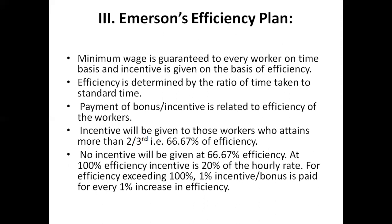The Emerson plan is similar to what we have studied before — Halsey and Rowan — but it is slightly different from those two. In this plan, minimum wages are guaranteed, as in the previous two plans, and the incentive is given on the basis of efficiency. The efficiency is determined by the ratio of the time taken to the standard time.